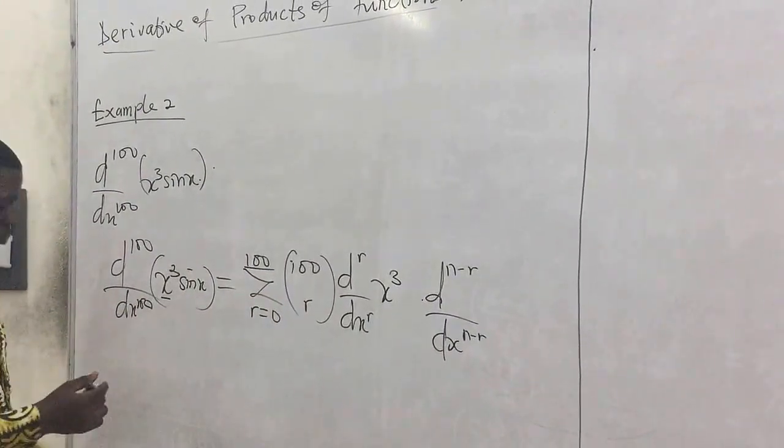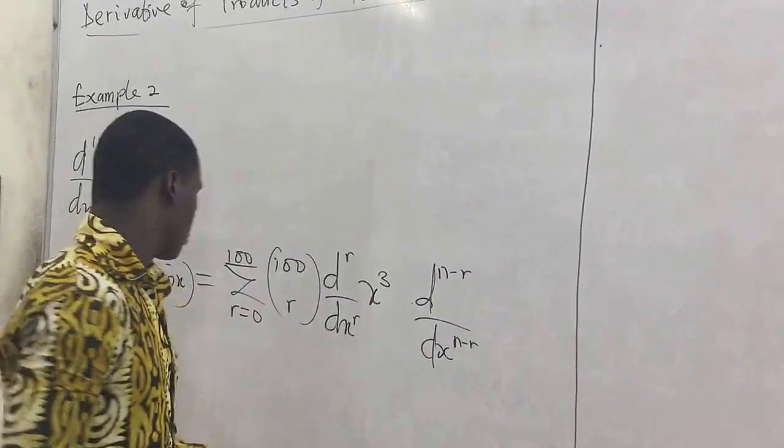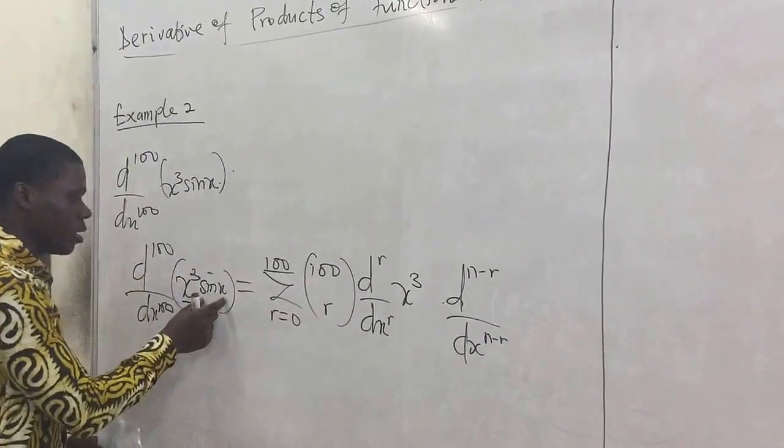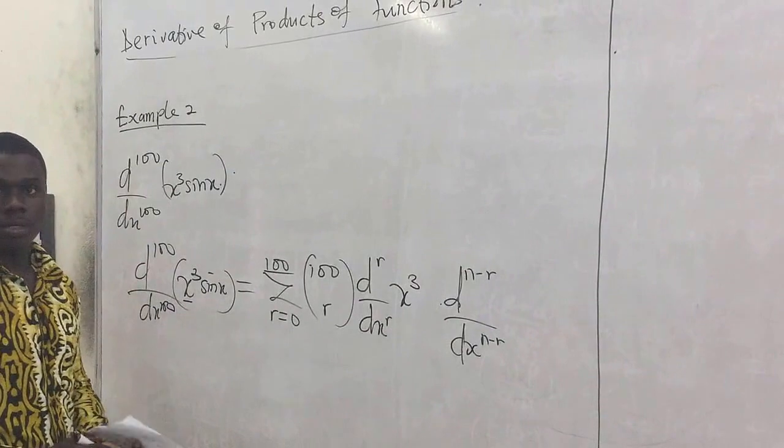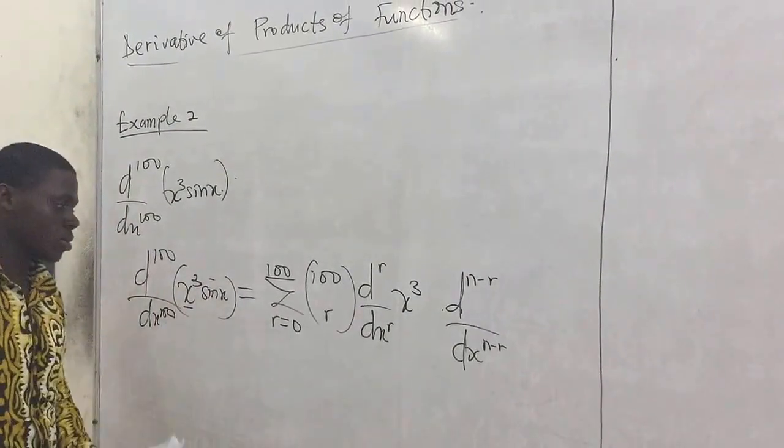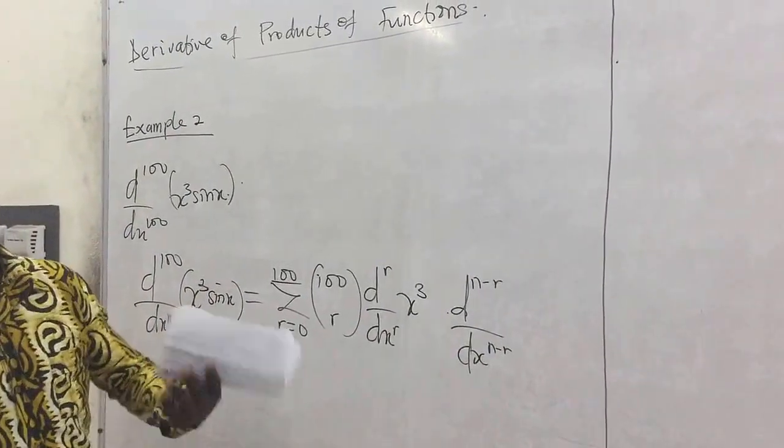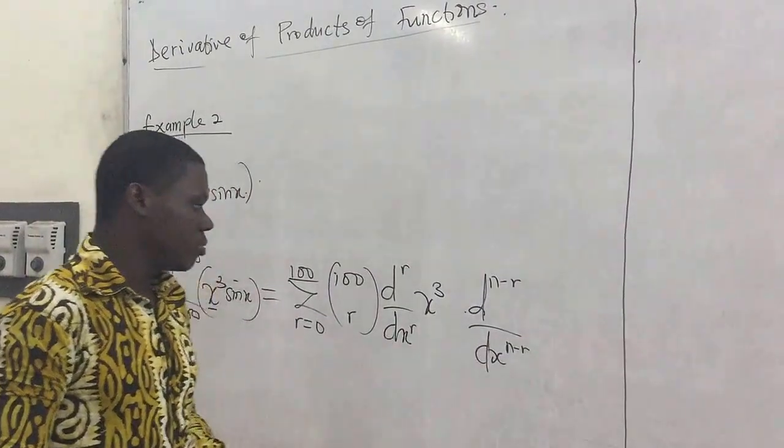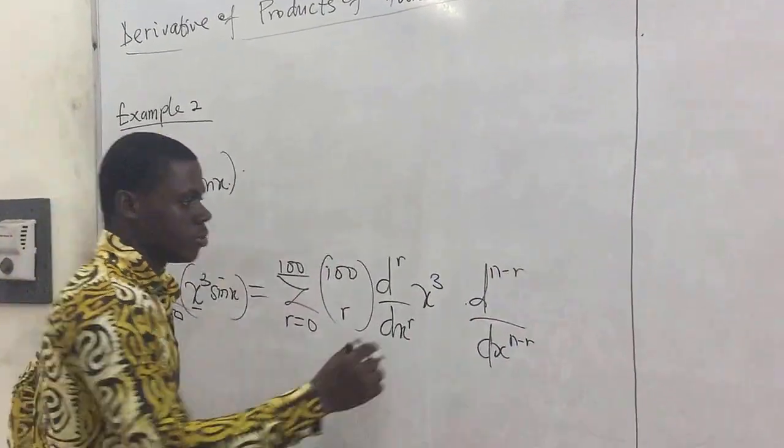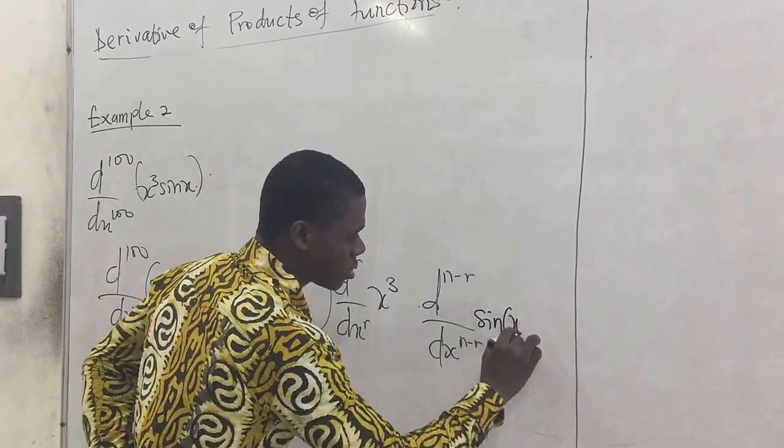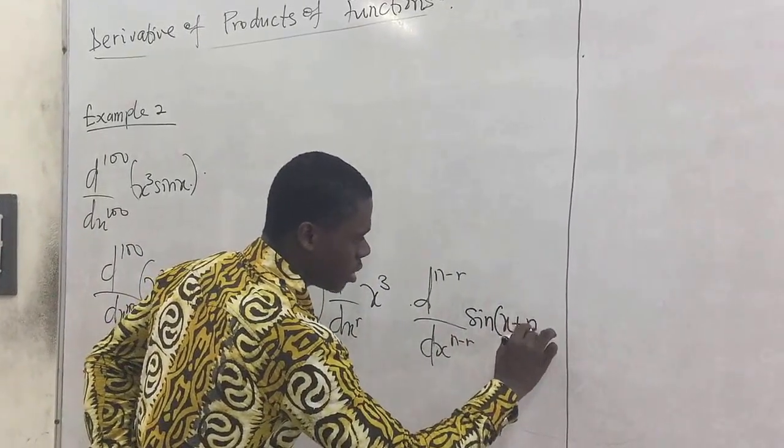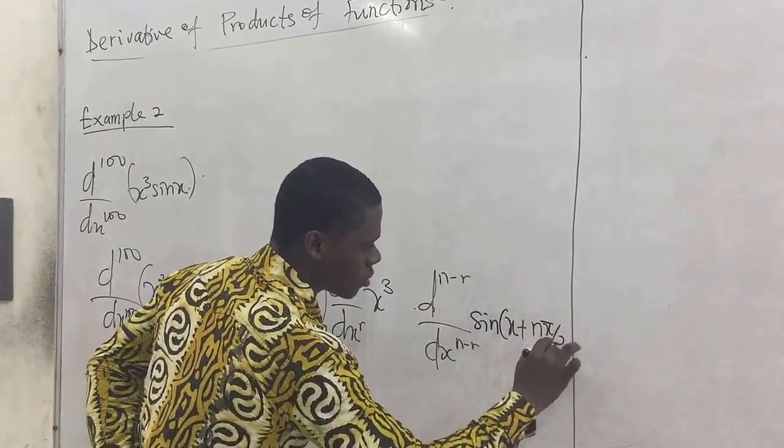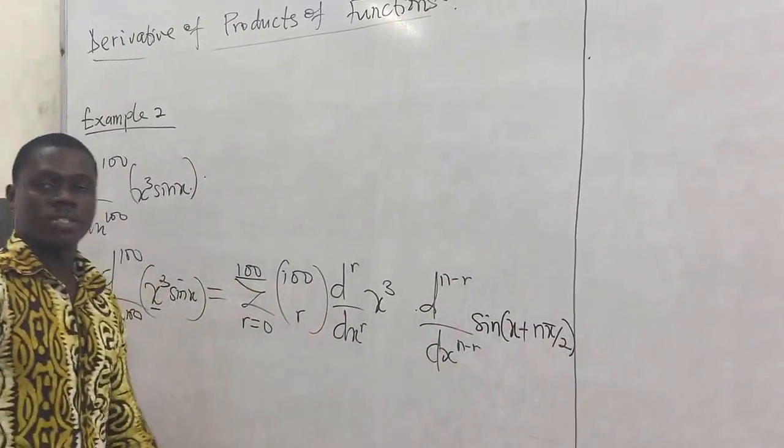So here again, you need to recall from the previous event, we were able to come up with the nth derivative of sin x. So if you are given sin x, you are asked to differentiate n times, what would it turn out to be? And we are able to say that it would be sin x plus n pi over 2. So we put the nth derivative there.